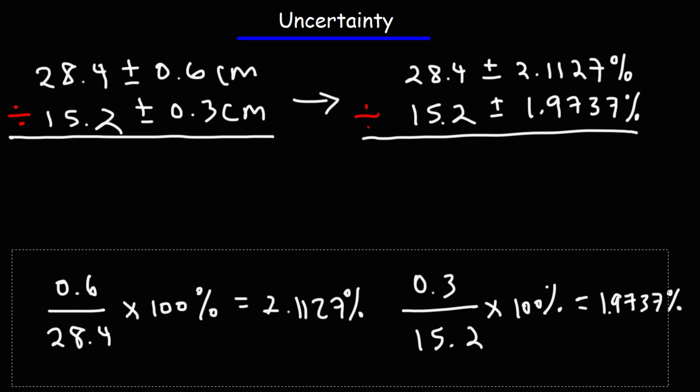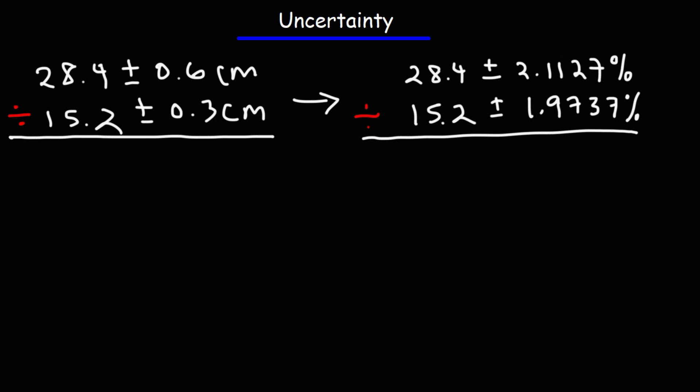All right, so now we can get rid of this. 28.4 divided by 15.2. So that's 1.8684. I like to get a few additional digits because I'm going to round it later and plus I'm going to get a percentage of that number. So I want to get a more accurate answer and then round at the very end. When you round in the middle of the operations, it'll compound and create a bigger error at your final answer. So it's always good to round at the very end.